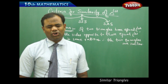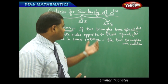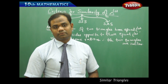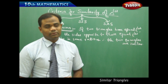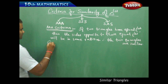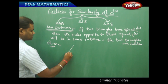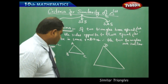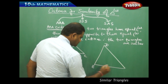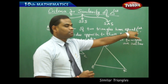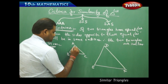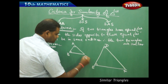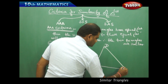We are proving the condition that corresponding sides are equal indirectly when two triangles have their corresponding angles equal. Given two triangles ABC and DEF such that angle A equals angle D, angle B equals angle E, and angle C equals angle F.